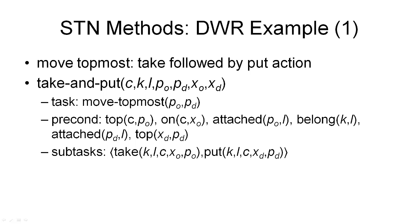I'll start with the simplest method: moving the topmost container, which is a take action followed by a put action. The name of the method is 'take and put,' and the parameters include: C, the container being moved; K, the crane used to pick it up and put it down; L, the location; the origin pile and destination pile; XO, the container from which we take C; and XD, the destination container onto which we place C.